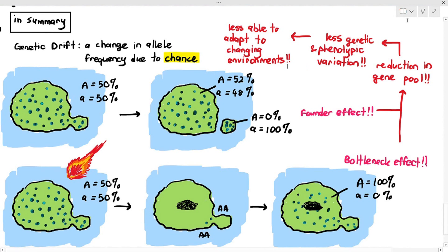What does it mean to be less able to adapt to a changing environment? If all organisms are exactly or almost exactly the same, something negative that impacts some of them has a tendency to impact all of them. For example, if all the plants in an area were tall due to less variation, and there were extremely strong winds, all the plants might die because they might all bend and snap. So, genetic drift is when allele frequency changes due to chance or random events, and the two examples are the founder effect and the bottleneck effect.